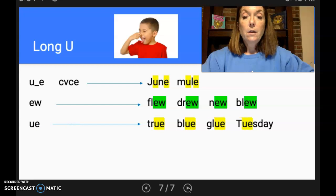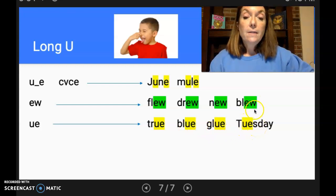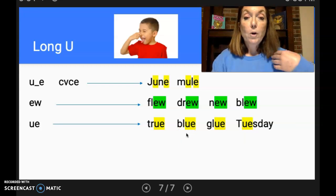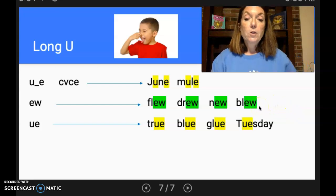And then our last spelling of the long U is UE. And here are some examples. True, blue, glue, and Tuesday. Now I'm noticing that this word, blue, is the same as this word, blue, but they're spelled differently, which means they have different meanings. So this blue, you might recognize as the color word. So you might be talking about, I'm wearing a blue shirt. Blue's my favorite color. And this kind of blue refers to the past tense of blow, like the wind blew hard yesterday. So, and when two words sound exactly alike, but are spelled differently, that is called a homophone. And we'll get into that later. But today I just wanted to review the long vowel sounds with you.